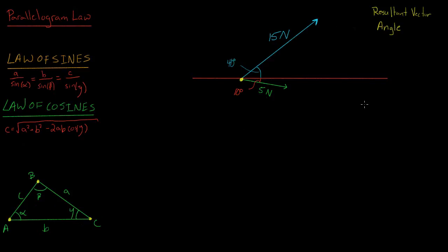The example I want to look at is this: I have two different vectors. One vector has a magnitude of 15 newtons and is 40 degrees from this horizontal — this red line. I also have a 5 newton vector with a magnitude of 5 newtons, 10 degrees below this horizontal. What I want to figure out is the resultant — if I add these two together, what is the resultant vector and what is the angle of the resultant from the horizontal?